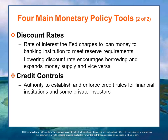The Fed is the lender of last resort for many banks — they can always go to the Fed, which will loan money if necessary to maintain the banking system. The final tool in the Fed's arsenal is credit controls — the authority to establish and enforce credit rules for financial institutions and some private investors. They must meet certain credit requirements and reporting requirements to maintain their bank certifications. The more credit rules put in place, the less lending there is, which slows down money flow.